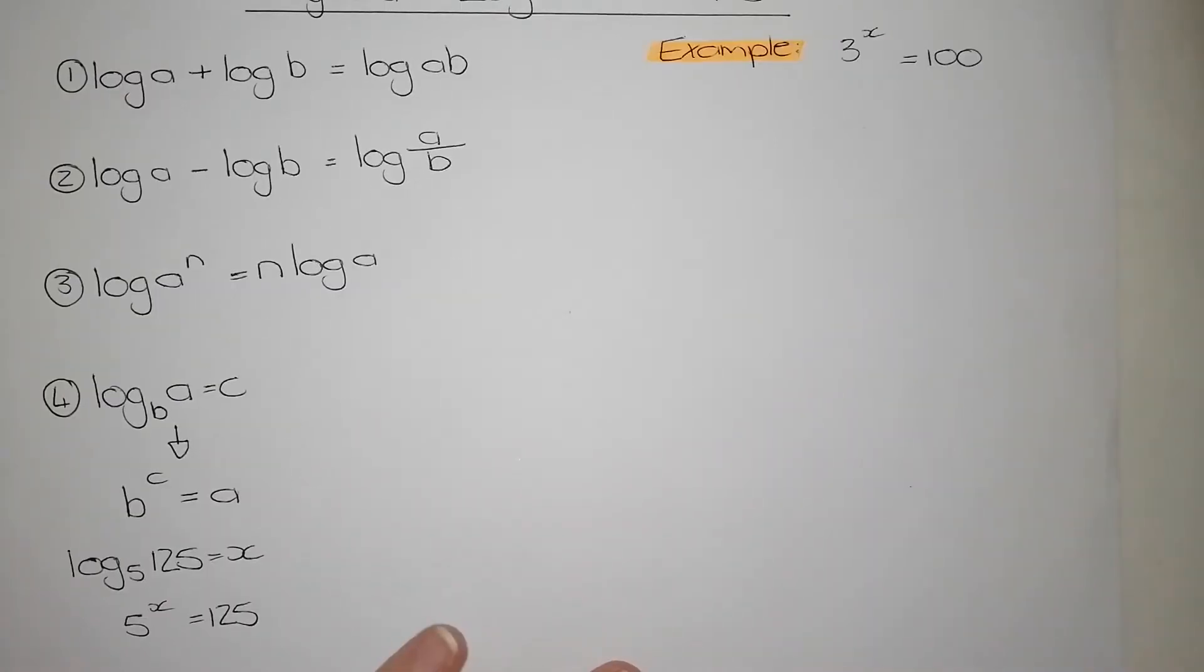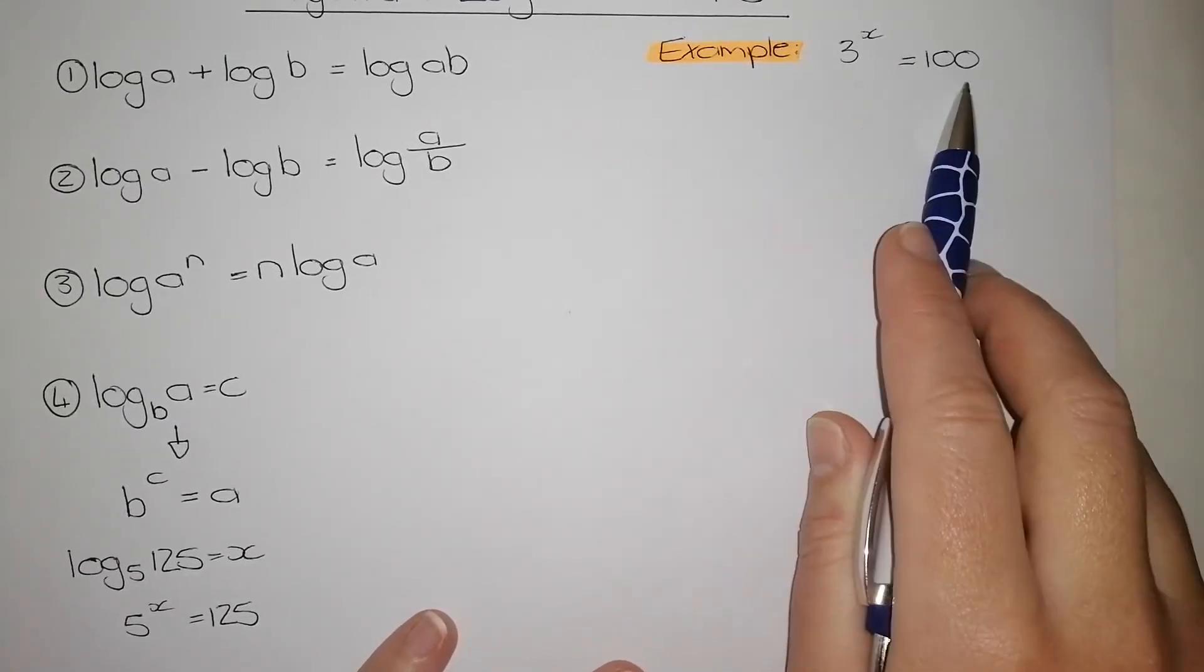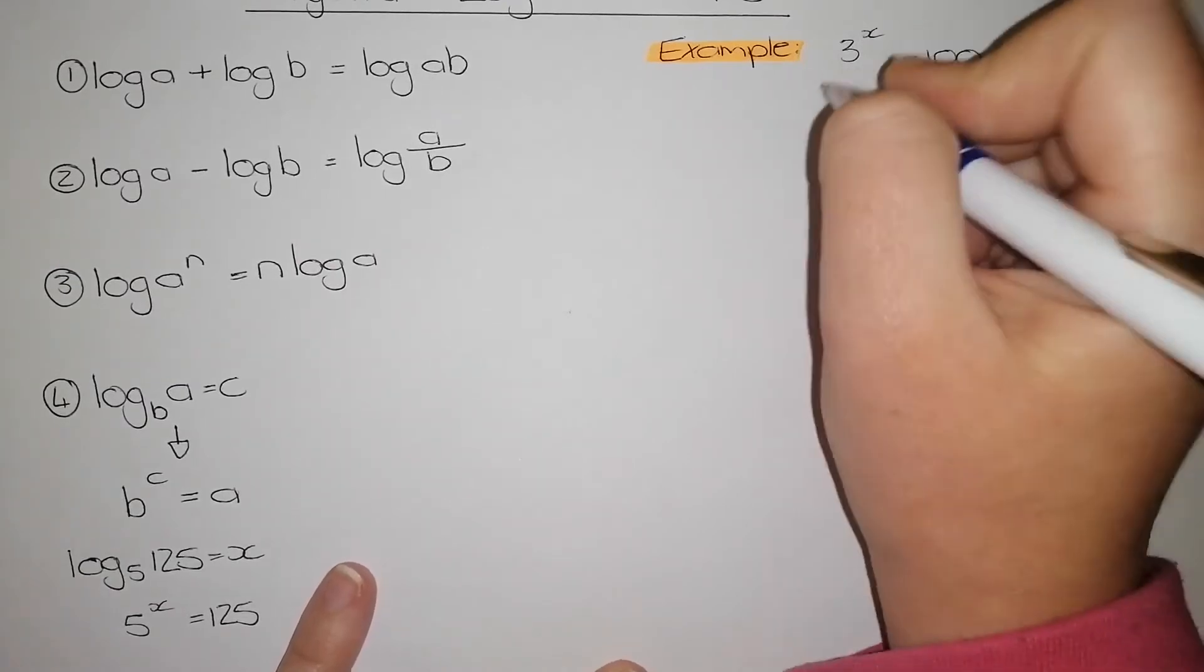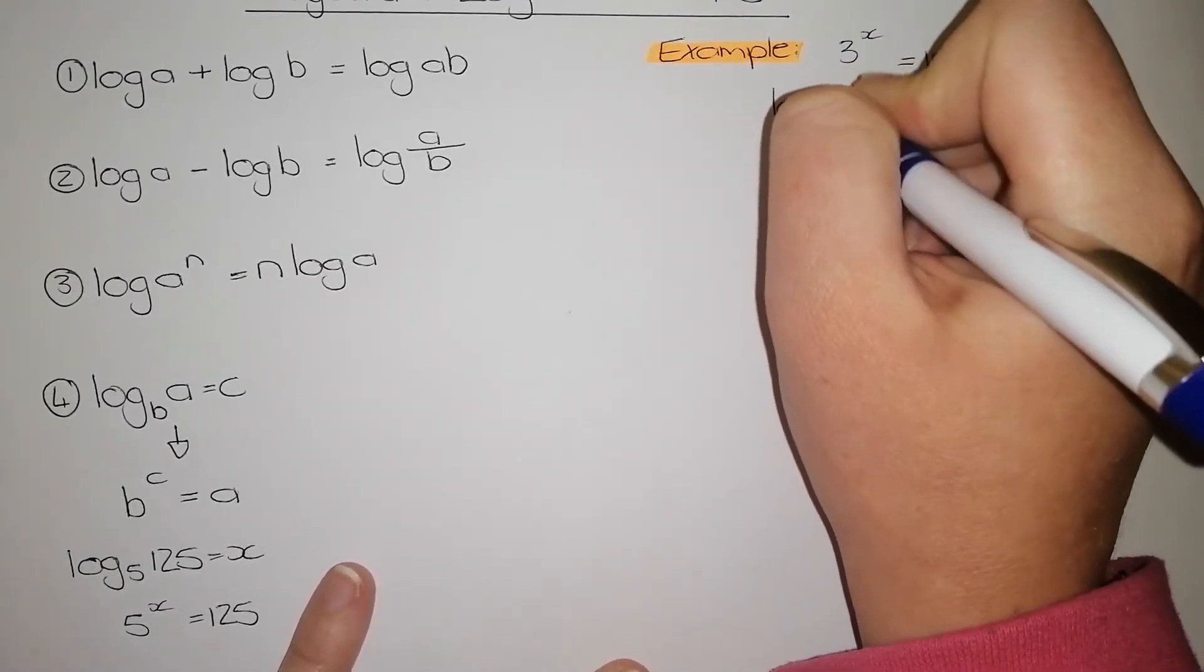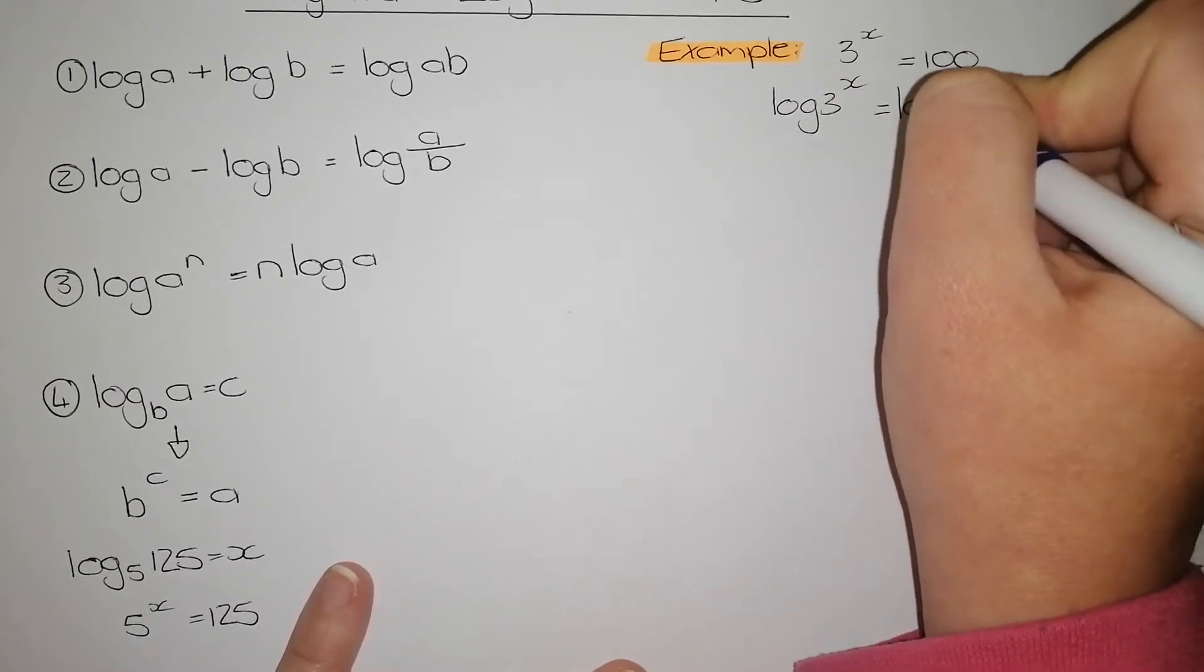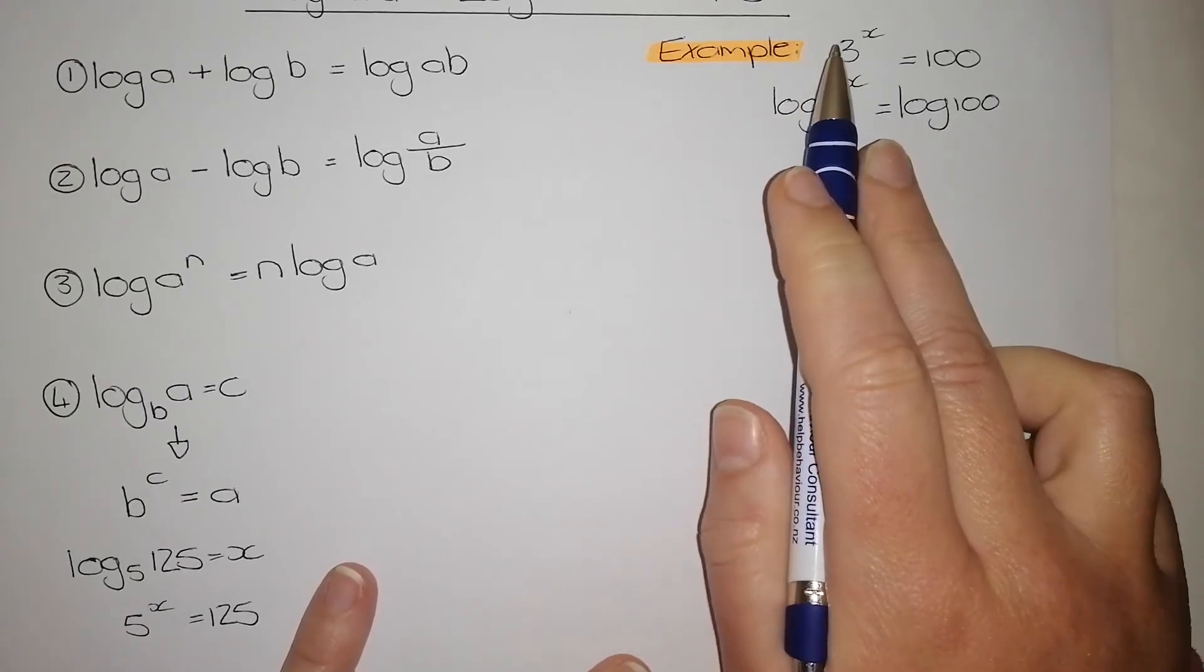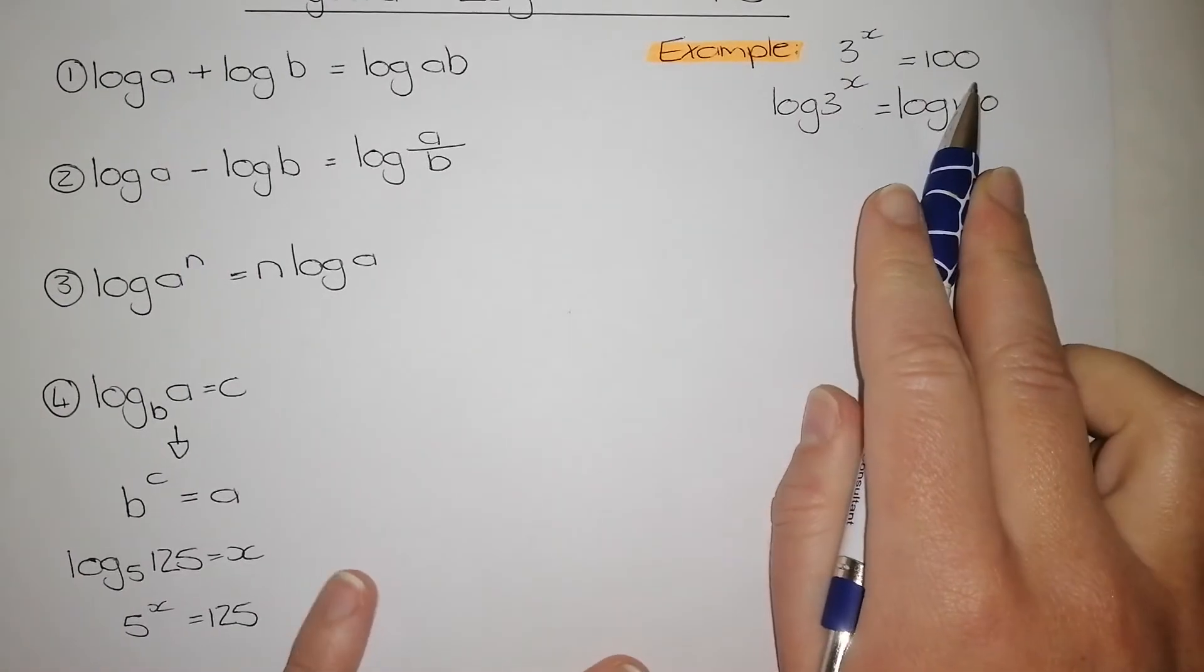When you start using logarithms, the first thing we need to do is we need to put a log in front of both of my terms. So, my first step is writing out log 3 to the power of x is equal to log 100. Very important that you put a log in front of both of your left hand side as well as your right hand side.